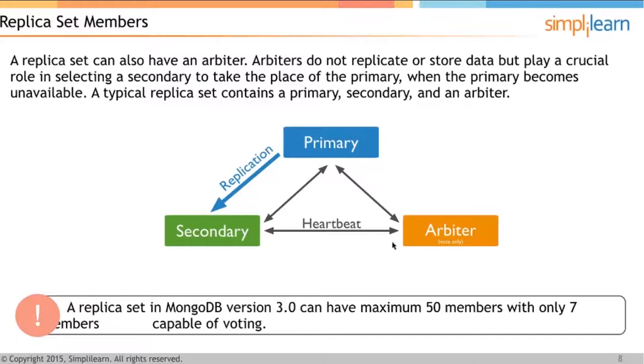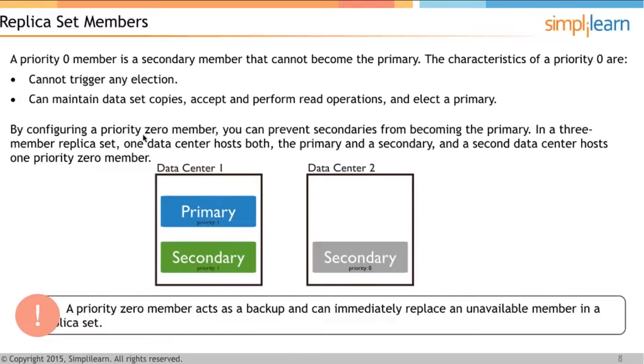In MongoDB version 3.0, a replica set can have a maximum of 50 members, with only 7 members capable of voting in an election.